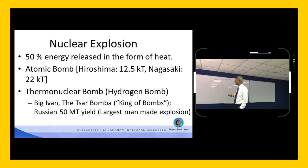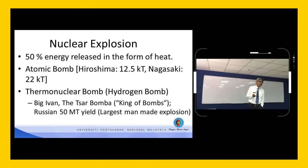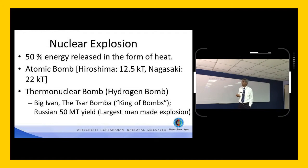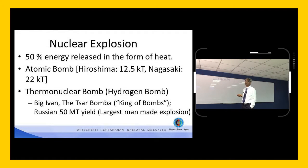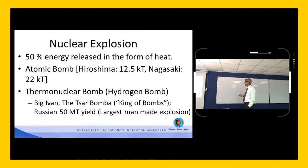The interesting thing is that the Hiroshima device was a barrel type and the Nagasaki device was an implosion type. Both used high explosives to propel or compress the fissile material. Most of the understanding about high explosives and energetic material behaviour was developed during the Manhattan Project, where these bombs were designed and manufactured.